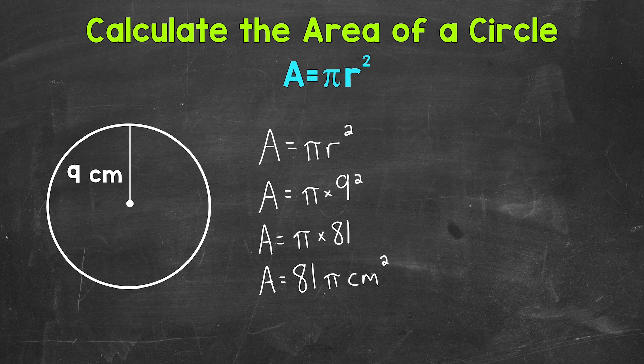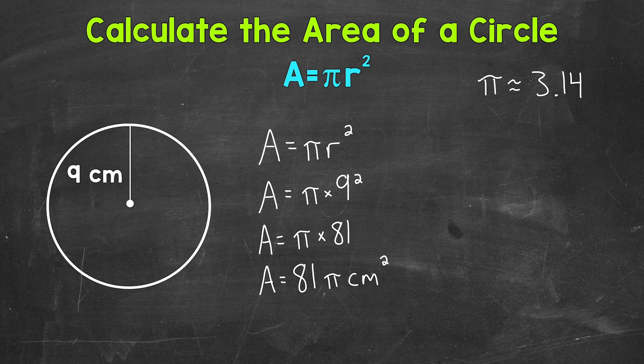Another way we can do this is to use an approximate version of pi. We're going to use 3.14. Pi is approximately 3.14 — that squiggly equal sign means an approximate value, unlike an equal sign which means an exact value. So something to keep in mind when you see that.